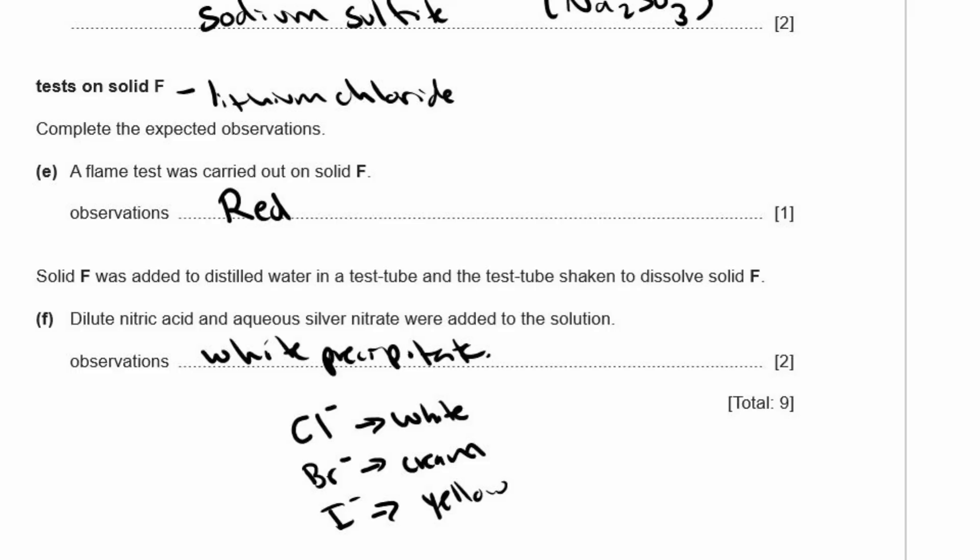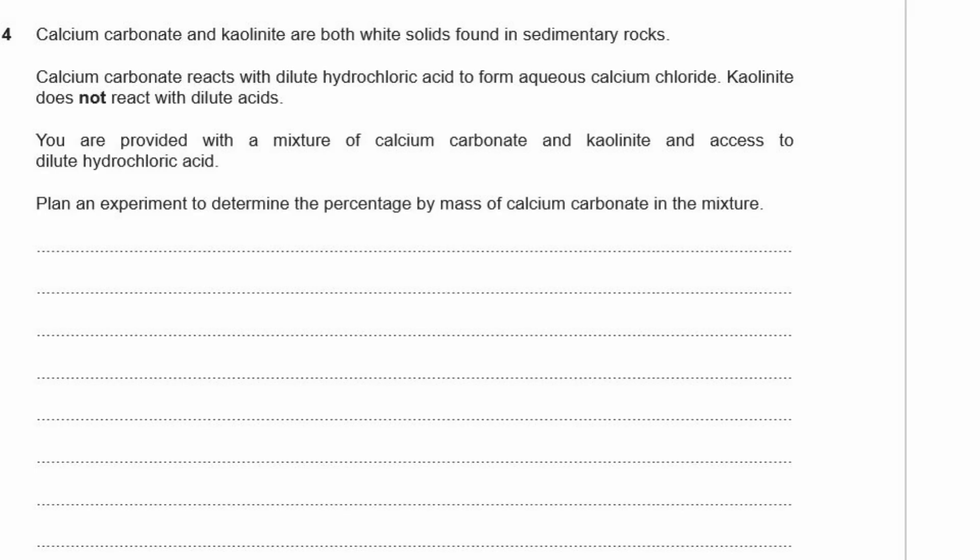Let's move on to question four. Question four. Calcium carbonate and kaolinite are both white solids found in sedimentary rock. Calcium carbonate reacts with dilute hydrochloric acid to form aqueous calcium chloride. Kaolinite does not react with dilute acids. You are provided with a mixture of calcium carbonate and kaolinite and access to dilute hydrochloric acid. Plan an experiment to determine the percentage by mass of calcium carbonate in the mixture. Okay, so you have a mixture of both of them. You want to figure out how much of it is calcium carbonate. So there are two different ways you could do this. You could either basically react the mixture with lots of acid and just wash the residue left behind and weigh what's left behind and find the difference. That's probably the easiest one.